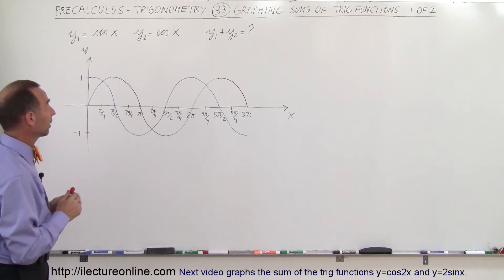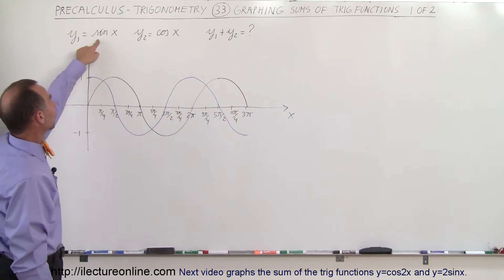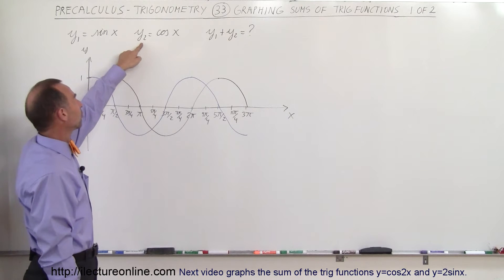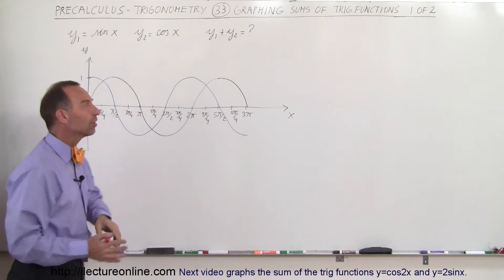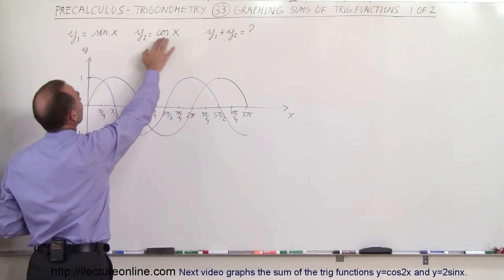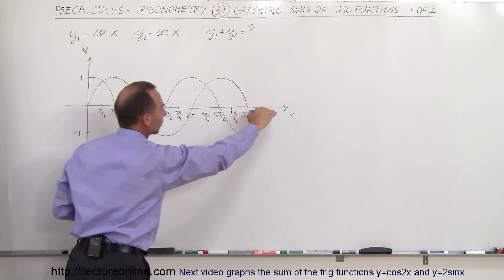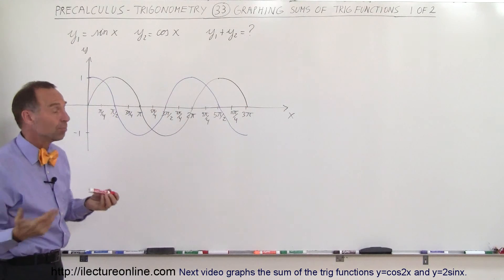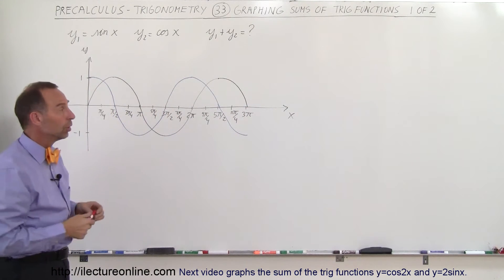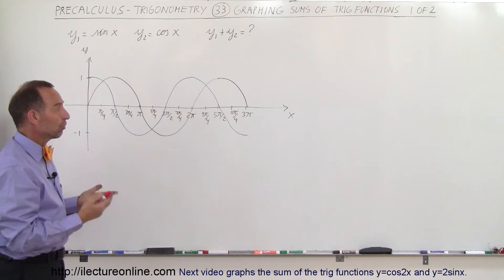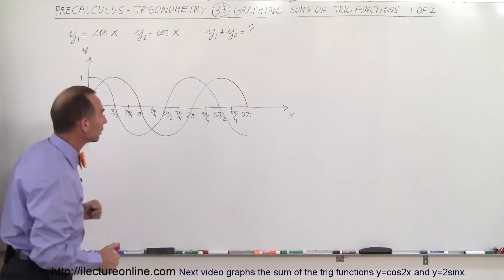The first example is relatively easy. Our first function y1 is equal to the sine of x and the second function y2 is equal to the cosine of x. Notice in this case, instead of using theta, I used x and my horizontal axis is x. X can be a proper variable symbol to represent angle in terms of radians. So here you have the number of radians in the angle.